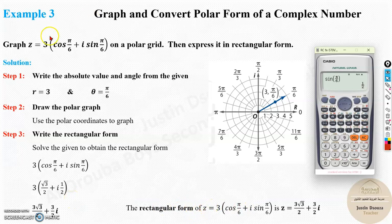The rectangular form of this particular complex number, which is given in polar form, is 3 root 3 by 2 plus 3 by 2i. These both are equivalent. This is the polar form. This is the complex form.